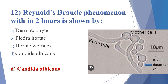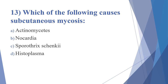Thirteenth question: which of the following causes subcutaneous mycosis? Options: Actinomycetes, Nocardia, Sporothrix schenckii, Histoplasma. The answer is Sporothrix schenckii. Actinomycetes and Nocardia cause mycetoma (actinomycetoma) and both are bacteria. Histoplasma causes systemic infection — that is systemic mycosis, also known as Darling's disease.